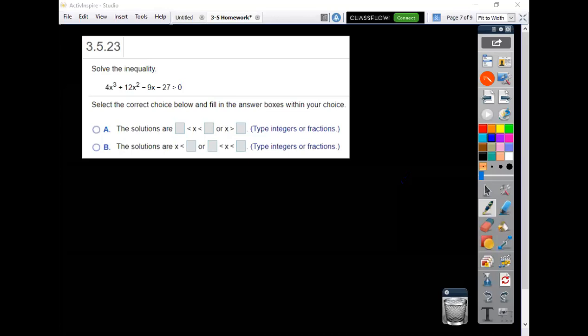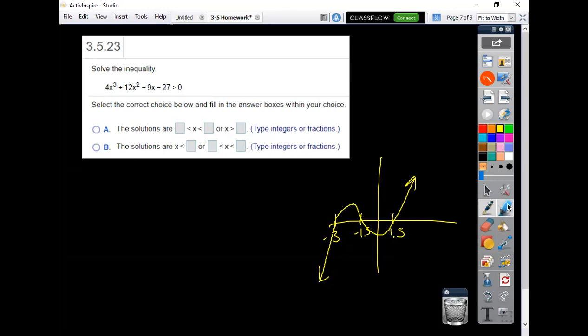So our problem was, looks like the negative 3 over here, the negative 1.5 there, the 1.5 here. And my end behavior for a cubic would have to be coming from below, so it was coming up there, down here, and then up here. And remember the directions or the inequality asked greater than zero, so that would be this piece here and that right there.